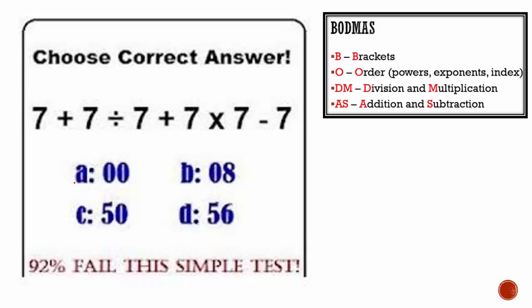Next problem. We're going to apply BODMAS. No brackets, no order, so we do division and multiplication first. 7 plus 7 divided by 7 is 1, plus 7 multiplied by 7 is 49, minus 7. Now we have addition and subtraction left to right: 7 plus 1 is 8, 8 plus 49 is 57, 57 minus 7 is equal to 50. So we get C.